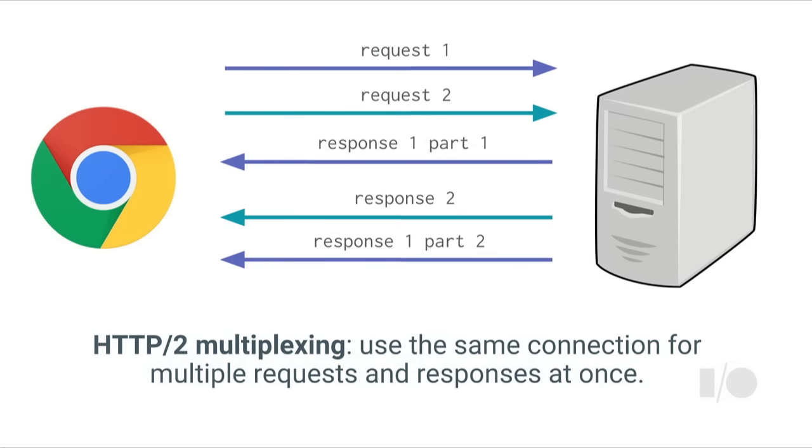What this means is that the browser can, for example, send a request and, before even waiting for the response, send a second request it knows it'll have to make. The server can start processing the first request, maybe even send part of the first response, but then it has to wait on a slow remote API call or a database call. While waiting, it can start processing the second request and send the second response. Then when that database call returns, it can finish the first response. Multiple requests and responses can be interleaved on the same connection, which has much improved network performance properties.